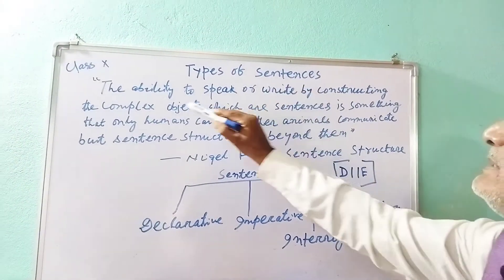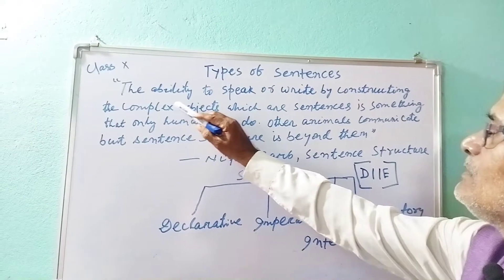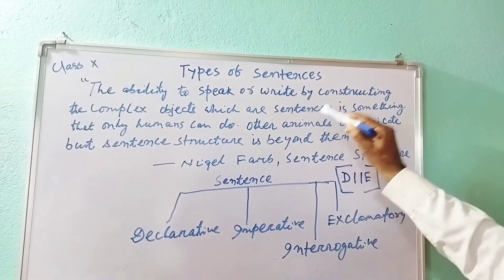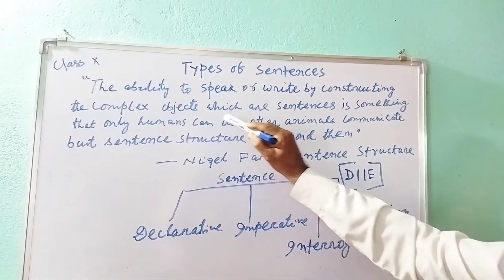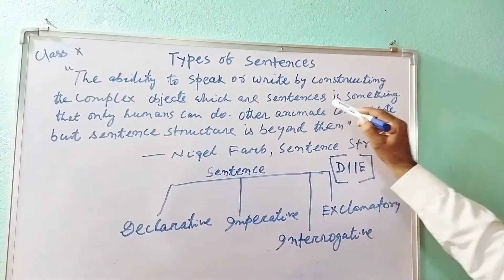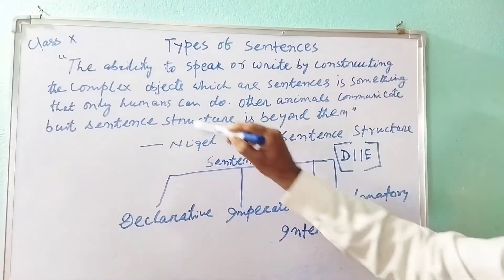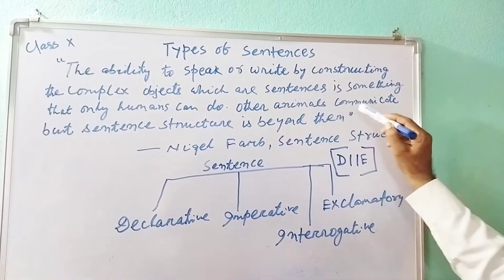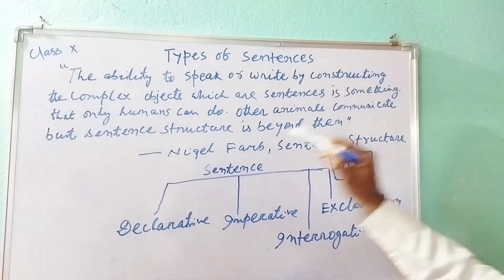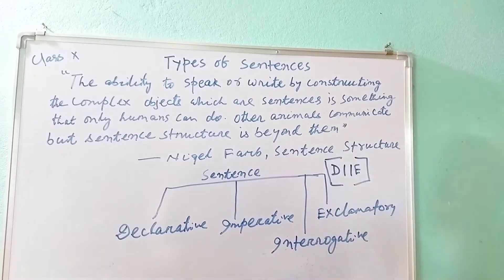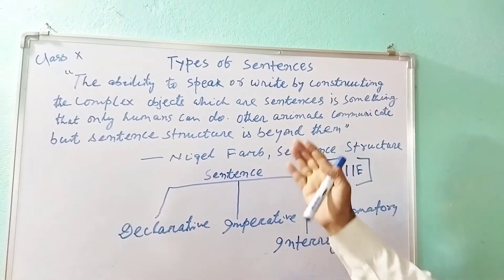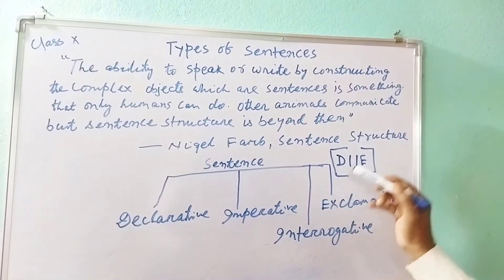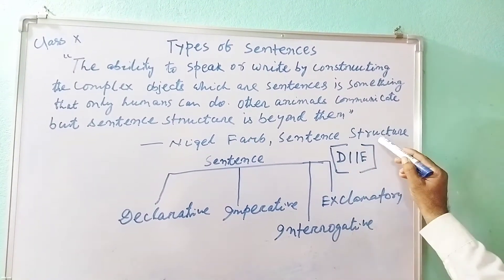Write them down — very important: the ability to speak or write by constructing complex objects which are sentences is something that only humans can do. Other animals communicate, but sentence structure is beyond them. It has been said by Nigel Farb in 'Sentence Structure.'